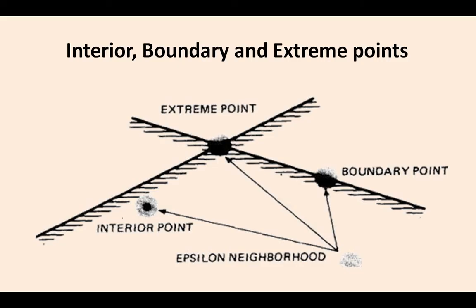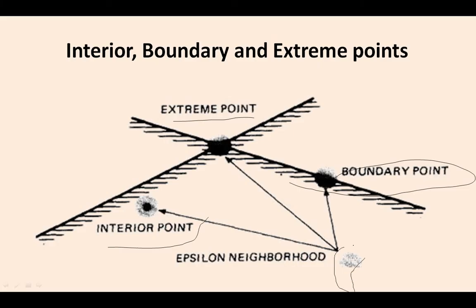These are the various kinds of points defined based on domains — inside of the domain, outside of the domain, and on the boundaries. If we see this pictorially, it is easy to understand. A point within the boundary — within the closure — is called an interior point. When two domains are conjoining, the intercepting point is called an extreme point. The point directly existing on the boundary is called the boundary point. A point inside the closed domain but adjacent to another domain's points is called the epsilon neighborhood point.